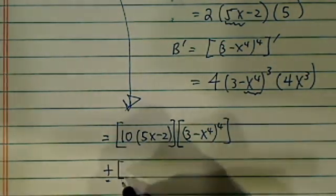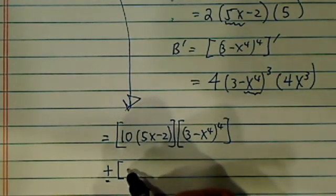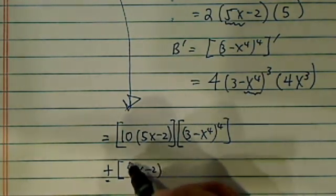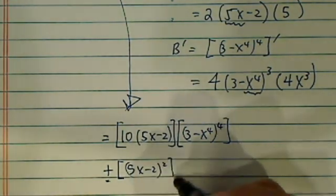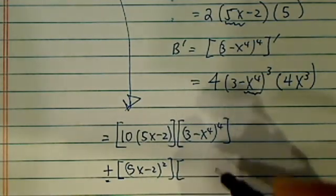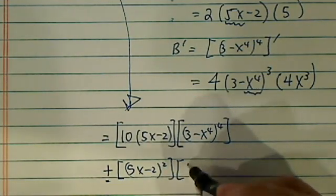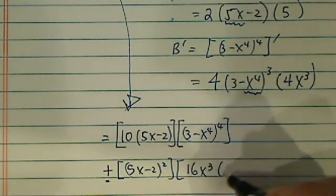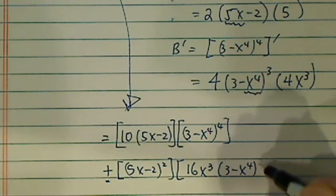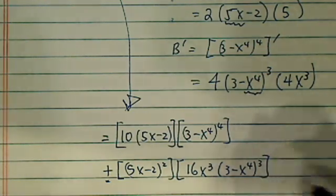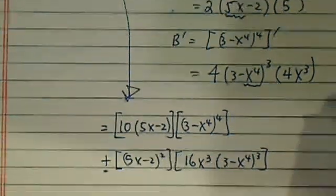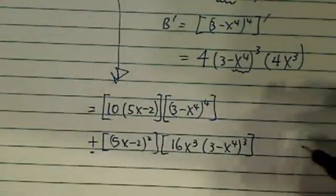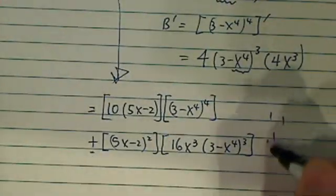The second one: leave the first one alone, which is (5x minus 2) the whole thing squared, times the derivative of the second one, which is 16x cubed, times (3 minus x to the 4th) the whole thing to the cube. So that wasn't too bad. Have a confident day.